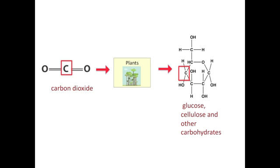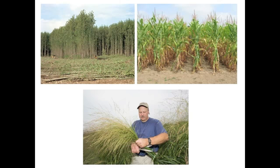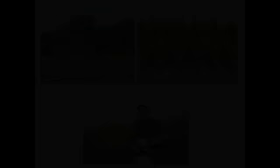We'll start with photosynthesis. Carbon dioxide enters the leaves of plants where it is chemically changed into the sugar glucose, using energy from the sun. Glucose, which is a simple sugar, is the building block for more complex carbohydrates such as starch and cellulose. These carbohydrates create the bulk of the plant, called biomass. Biomass can be anything from trunks of poplar trees, to corn stalks, to blades of switchgrass.